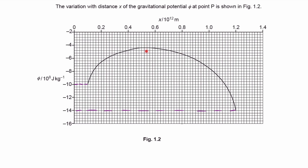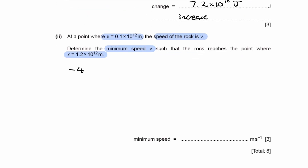What happens after the peak is irrelevant — how far it falls down doesn't matter. To get from star A's surface to star B's surface, the rock just needs enough kinetic energy to reach the neutral point. At that peak, the gravitational potential is −4.4 × 10⁸ J/kg. At the starting point it's −10 × 10⁸ J/kg. So the change in potential is: final minus initial = −4.4 × 10⁸ − (−10 × 10⁸) = 5.6 × 10⁸ J/kg. This is the gain in gravitational potential needed to reach the top of the gravitational potential hill.